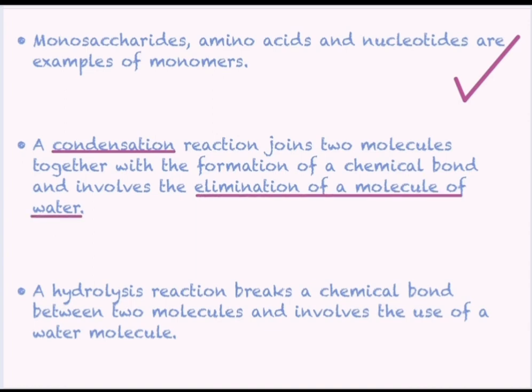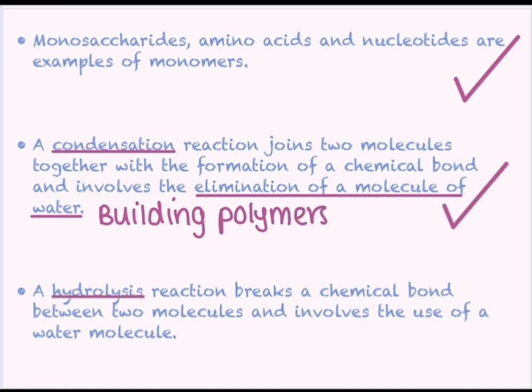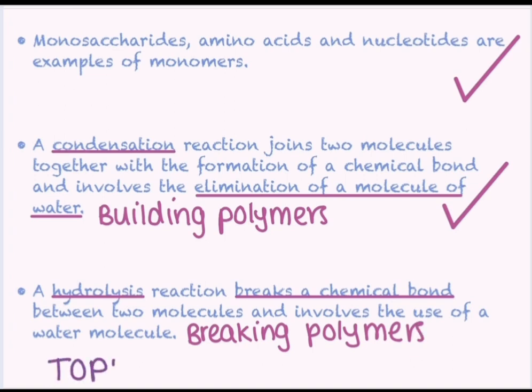And our final point on the specification is a hydrolysis reaction breaks a chemical bond between two molecules and involves the use of a water molecule. So again, we went through this hydrolysis reaction specific to each polymer and we identified that every time a bond is broken, we must have used a single molecule of water. So one molecule of water breaks one bond. So that's it, topic 1.1 complete. We have mastered all of the points on the specification.